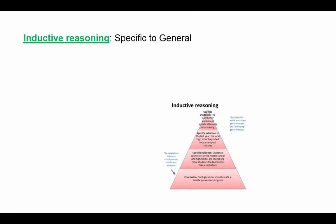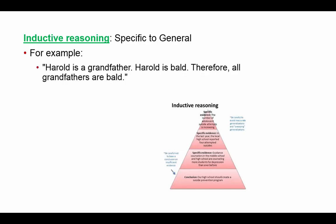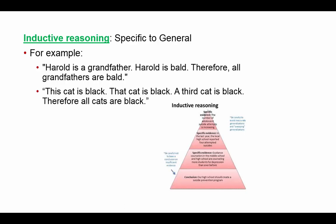Inductive reasoning is the opposite — we start with specific statements and use them to form generalizations. For example: Harold is a grandfather and Harold is bald, therefore all grandfathers are bald. Or: this cat is black, that cat is black, a third cat is black, therefore all cats are black. We're going from specific to general. Is that necessarily accurate? Not necessarily, but the purpose of inductive reasoning is to move from specific observations to general conclusions.